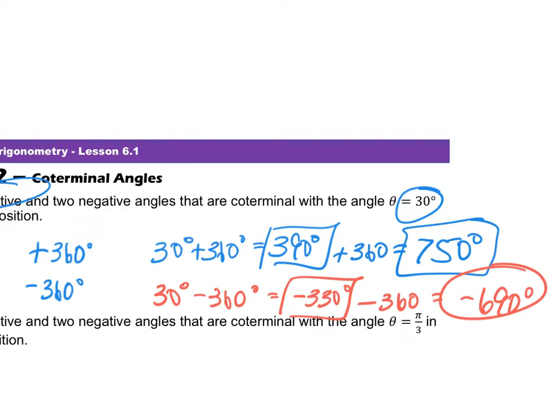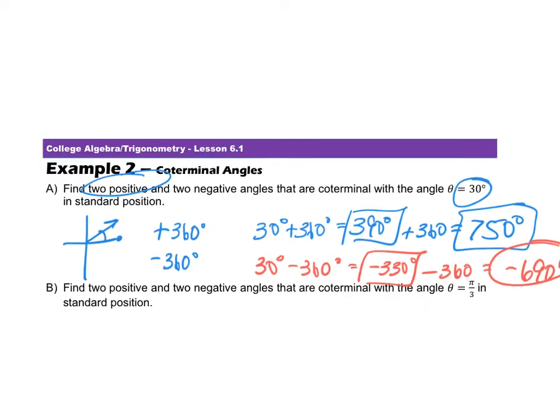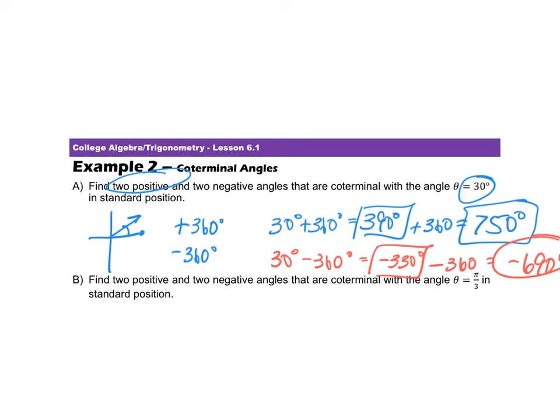So if you want positive and negative, you add and subtract. If you start off with a negative and you want a positive, you just keep adding until it becomes positive. You just keep subtracting until it becomes negative. Same thing is going to go along here. But instead of degrees, they gave me a radian measurement. So that means I have to think in radian.